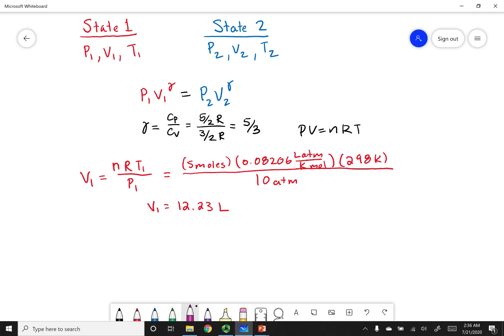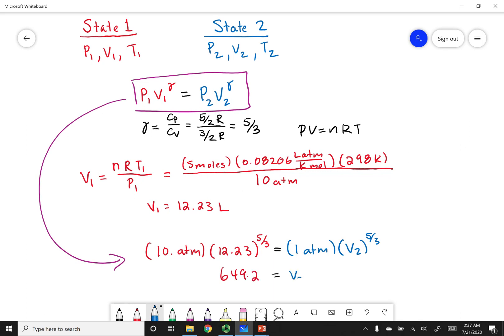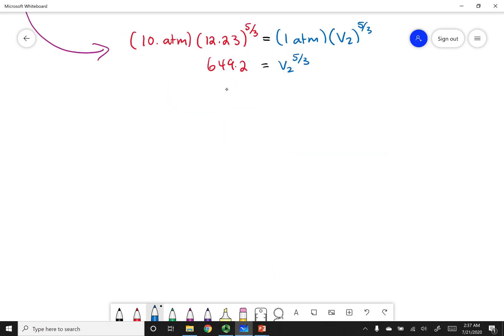Now that I have volume 1, we are ready to use this formula for the adiabatic process. So my pressure is 10 ATMs. I just calculated my volume, 12.23. And we also calculated our gamma, 5 thirds. Now this is going to equal my pressure. And I'm going to 1 ATM. I want to go ahead and solve for my volume. And again, this is raised to the gamma of 5 thirds. So we can do some calculations out. This is going to be 649.2. And that's going to equal V2 to the 5 thirds. Solving for V2 gets me 48.69 liters.